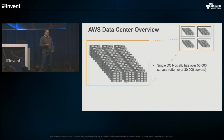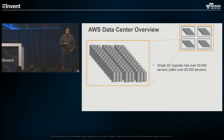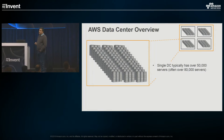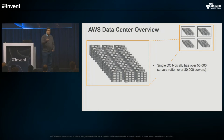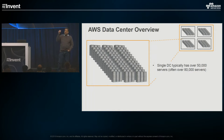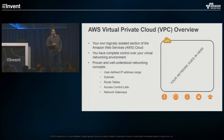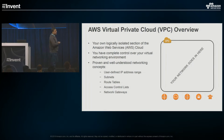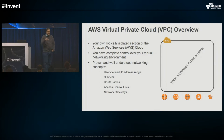Our data centers have tremendous capacity — we build them with tens of thousands of servers. You're not going to know where your application runs; it's going to be running on some of those servers. When creating an account and a VPC, the first thing is a region. Within the region, you create a VPC. A VPC is a way of getting your own isolated area in the AWS cloud. It segregates your application stack and network communication from others. All traffic inside the VPC is your own — you cannot see traffic outside, nor can people from outside see traffic inside.